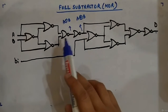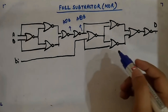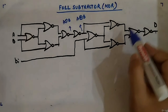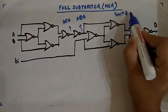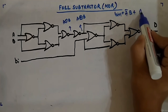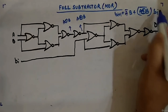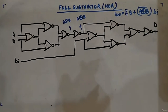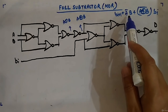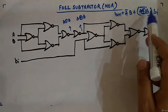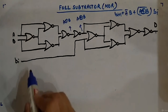The difference output requires a total of ten gates. Now, what about the borrow? The borrow expression is: Bi+1 = A_bar·B + (A XOR B)_bar · Bi. That is the expression for the borrow output.